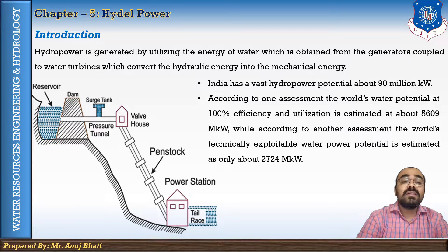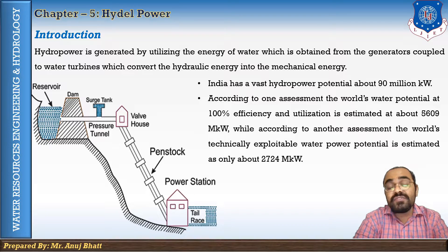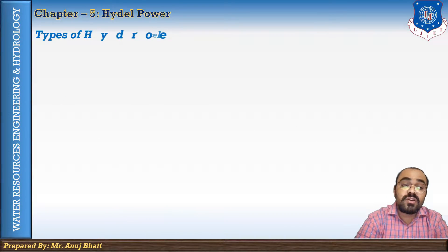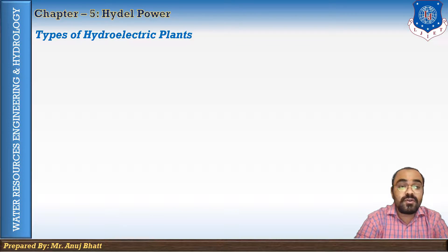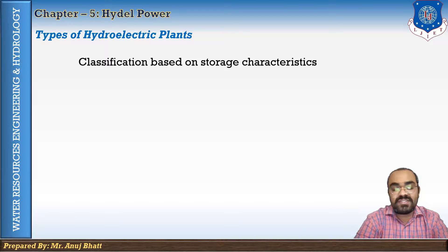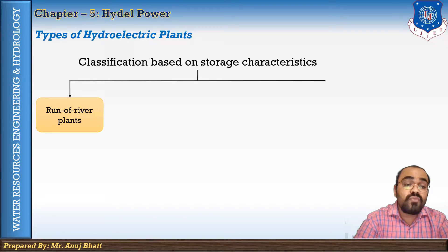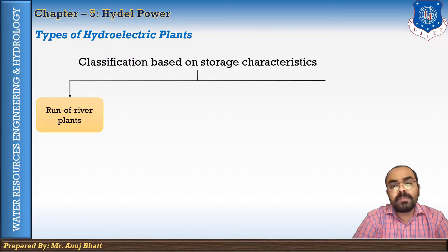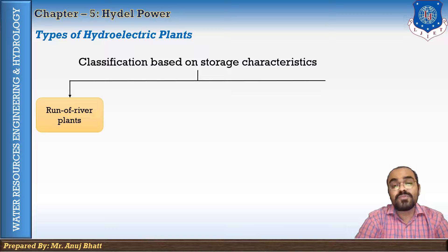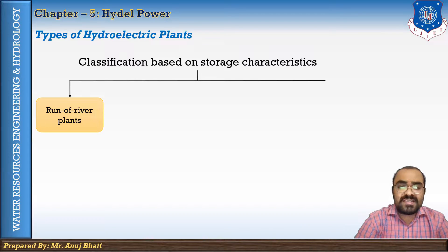Hydropower plants are classified into different categories. The first classification is based on storage characteristics. The first type is the runoff river plant. Runoff river plants are those which utilize the river flow having no storage at the upstream side. A weir or barrage is constructed across the river simply to raise the water level.